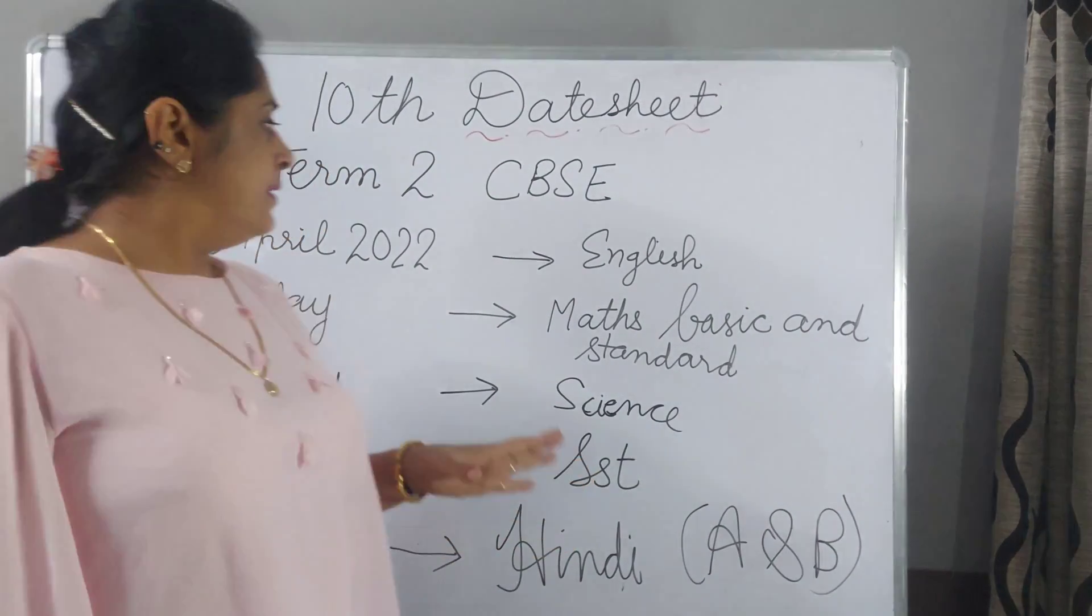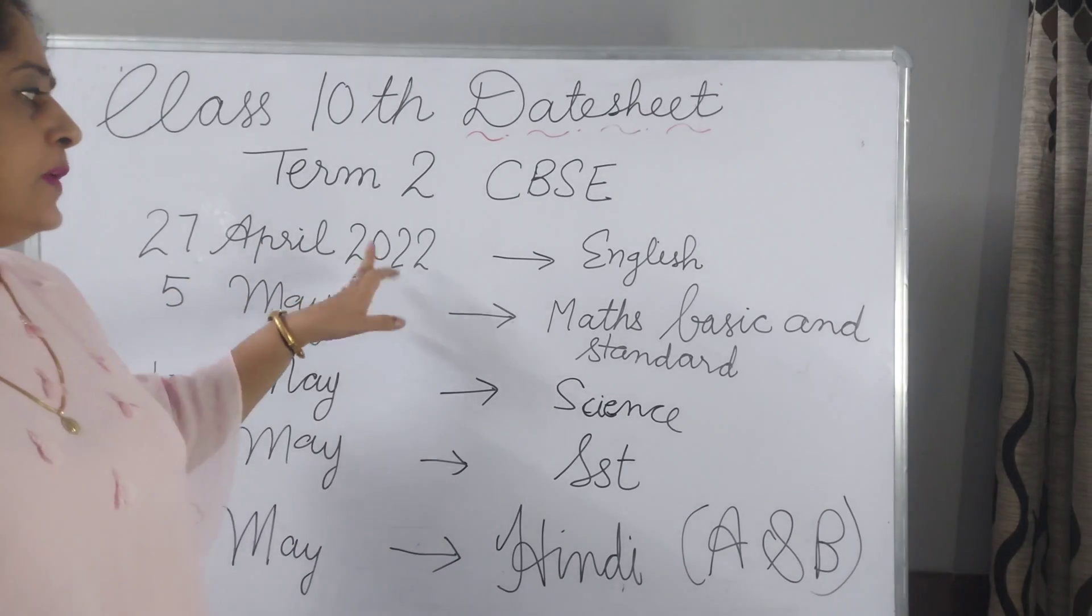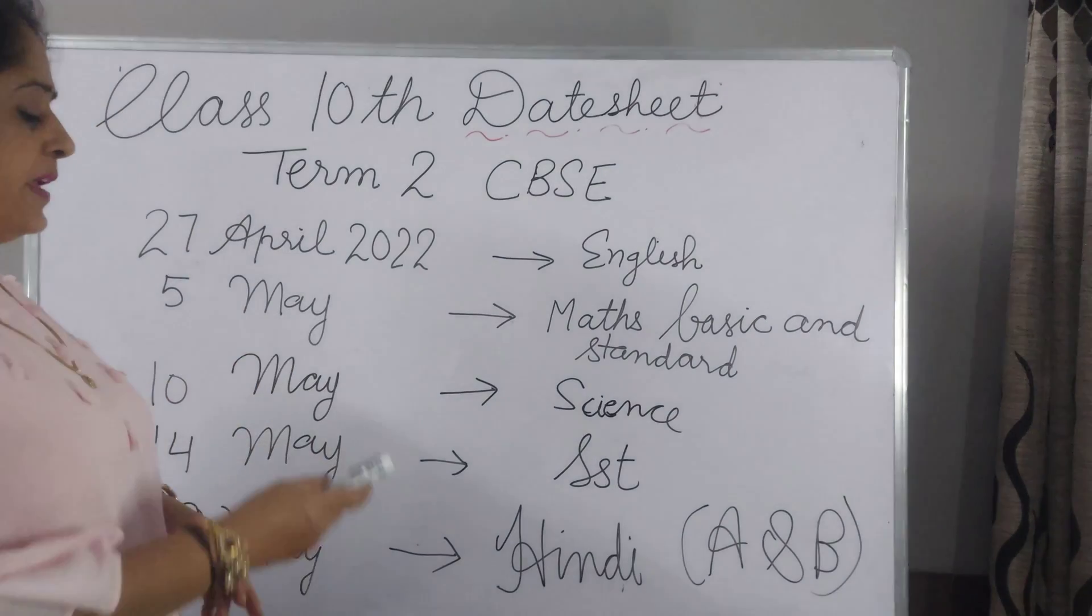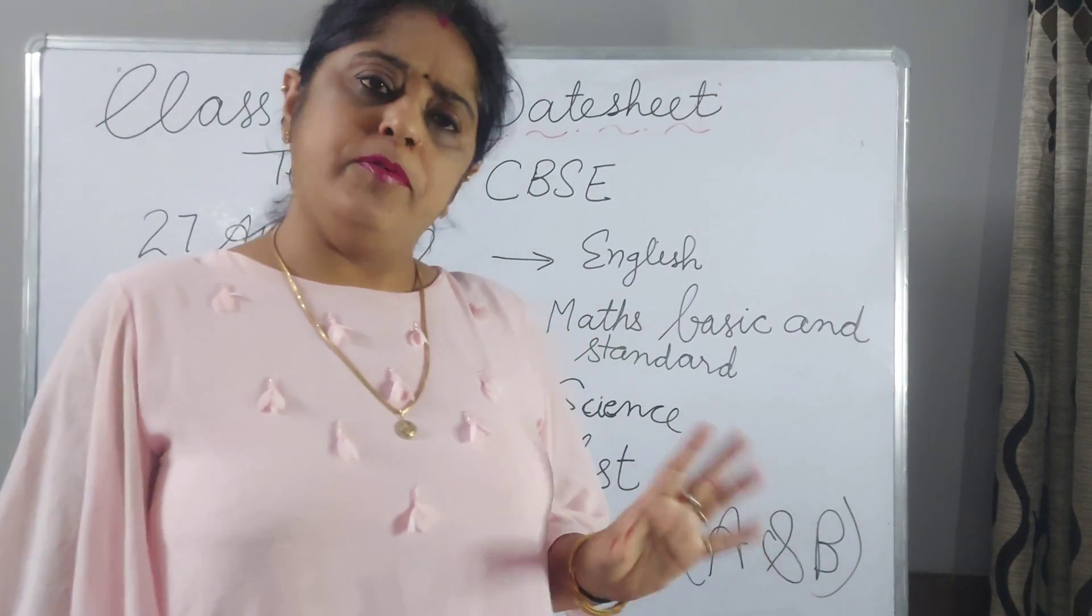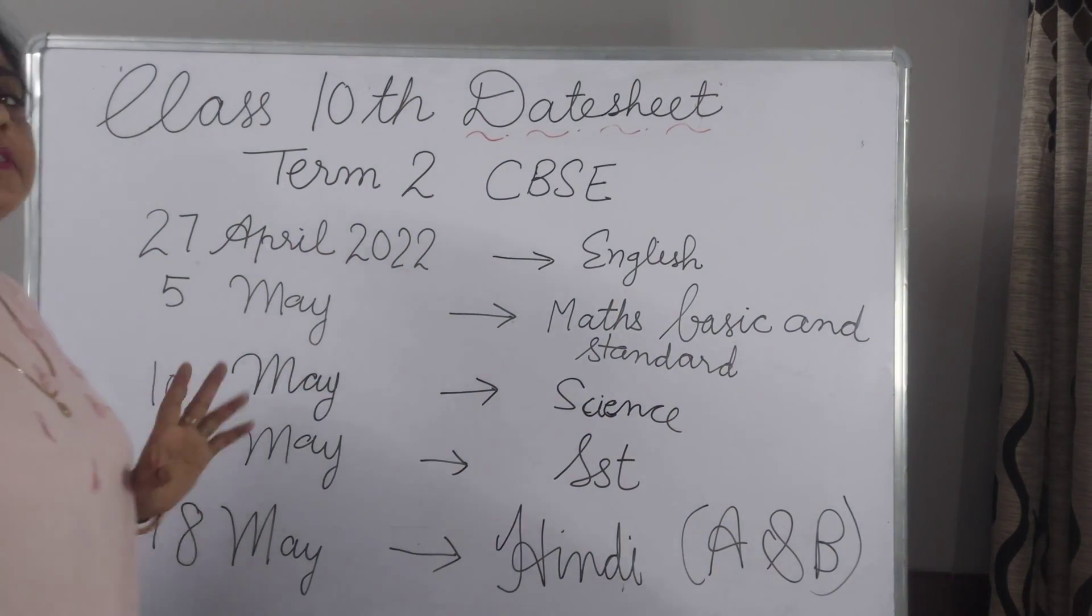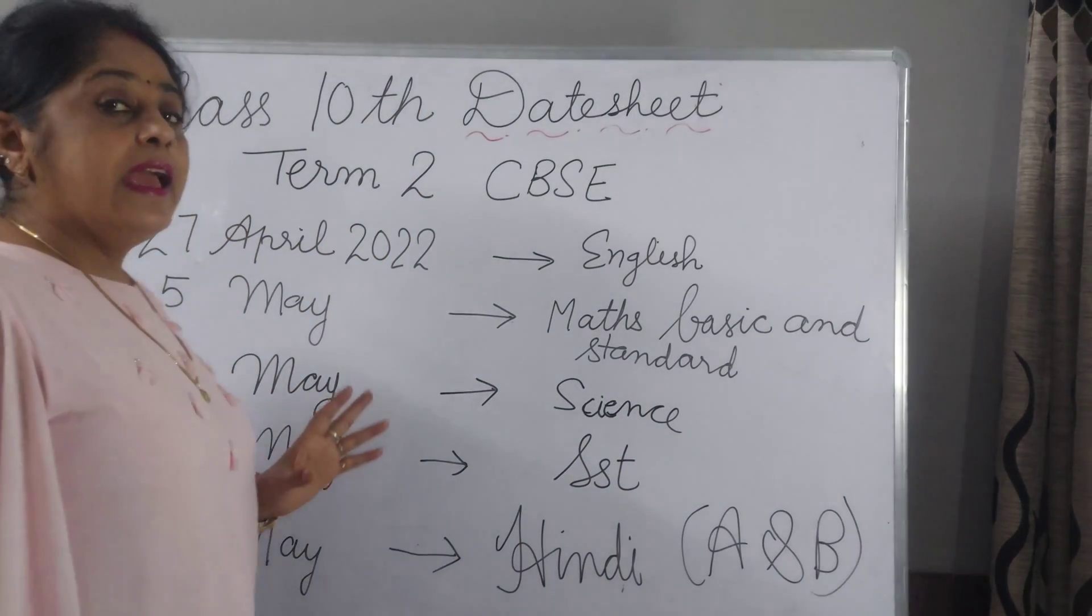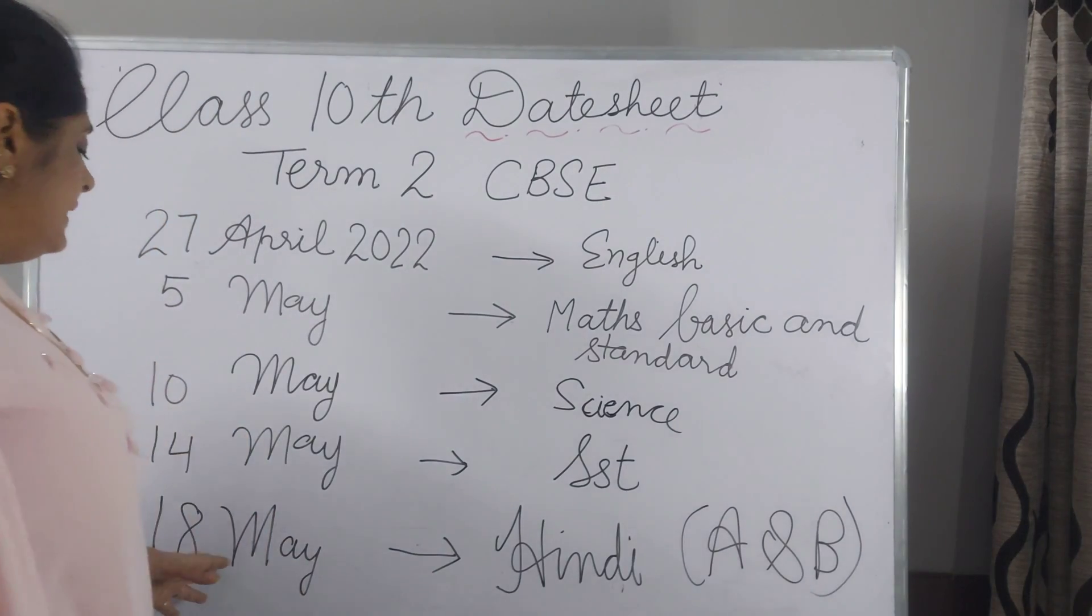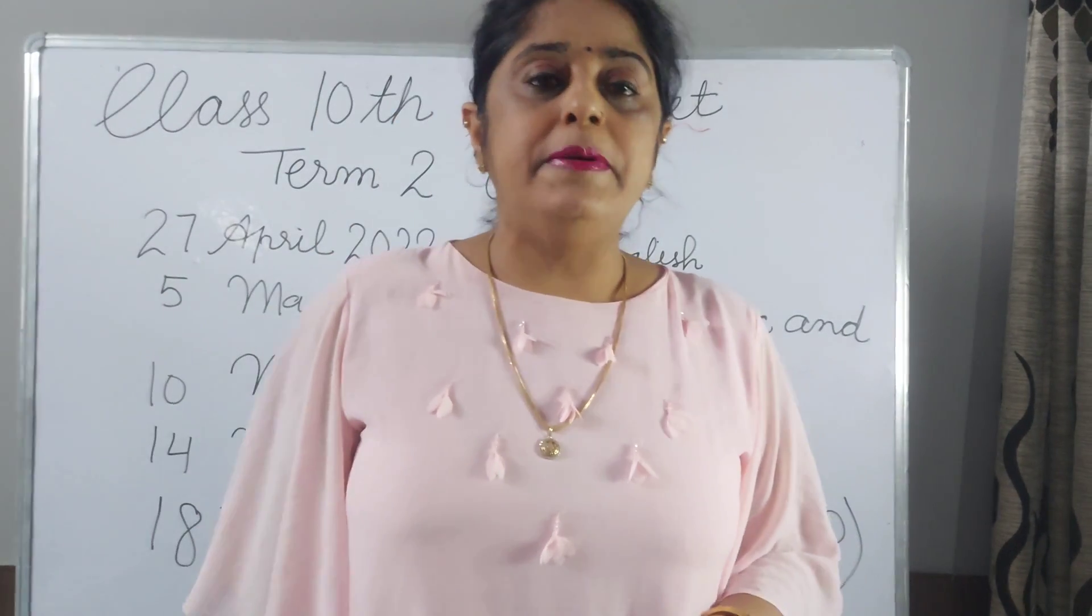Term 2 CBSE: 27 April 2022 English paper is there and 5 May there is math, basic and standard paper both on the same date, 5 May. 10th May science paper is there and 14th May SST paper will be there for class 10th and 18th May Hindi A and B paper will be there.